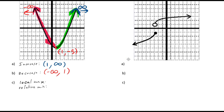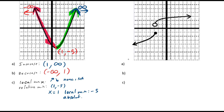For local max: a max means increase then decrease to the point, but on this graph there's none — you can also write 'not applicable.' For relative min, we do have one: that is (1, negative 5). We'd say x equals 1 and we have a local min of negative 5. This one is actually also called an absolute min — when it is the actual minimum value of an entire function or relation, it's called the absolute minimum. This graph came down and went back up forever, so that's an absolute min.